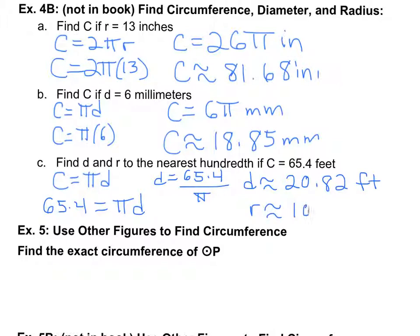Then to go from diameter to radius, cut it in half: 10.41 feet. The last type of problem we're going to go over in this video, which is talking about circumference, diameter, and radius, is to use other figures to find exact circumference.